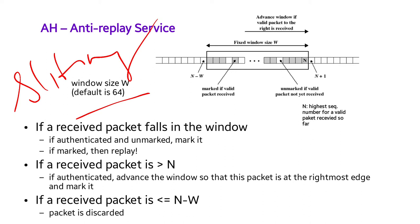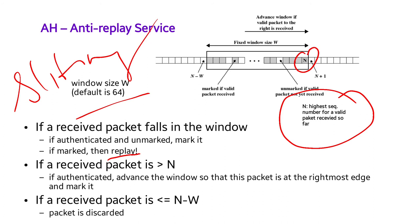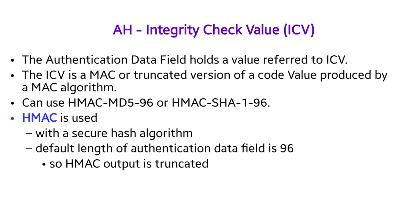In the sliding window: if a received packet falls within the window, it is authenticated and marked. If the received packet's sequence number is greater than N — where N is the highest sequence number for a valid packet — and it is authenticated, the window advances so that this packet is at the rightmost edge and is marked. If the received packet is less than N minus W, the packet is discarded. The integrity check value (ICV) refers to the authentication data field, which is a MAC or truncated version of a hash. Algorithms such as HMAC-MD5 or HMAC-SHA can be used, with a default output size of 96 bits.